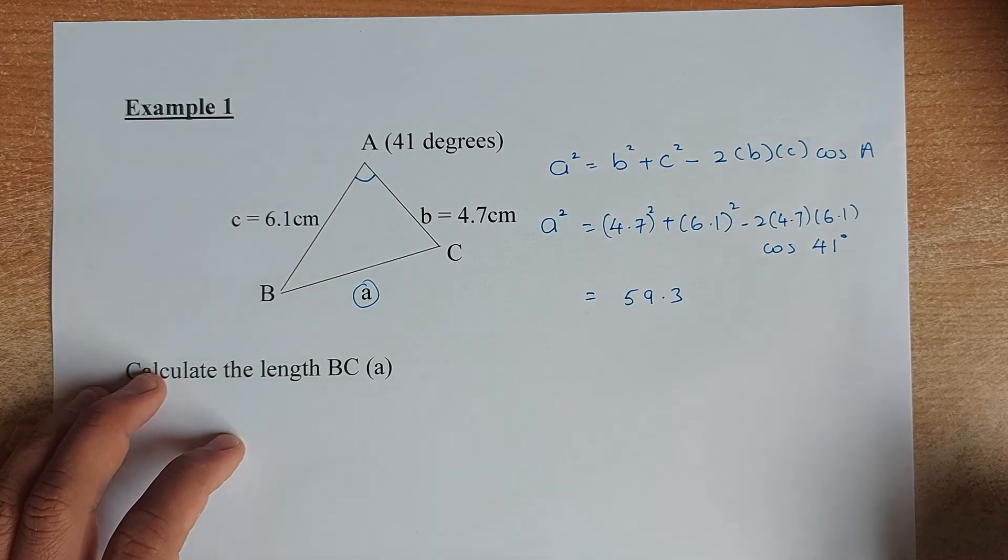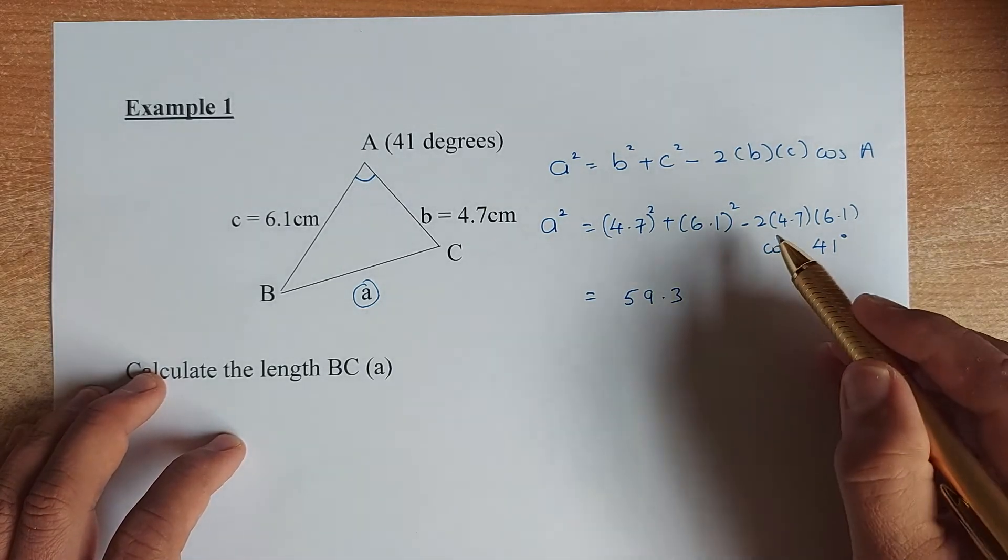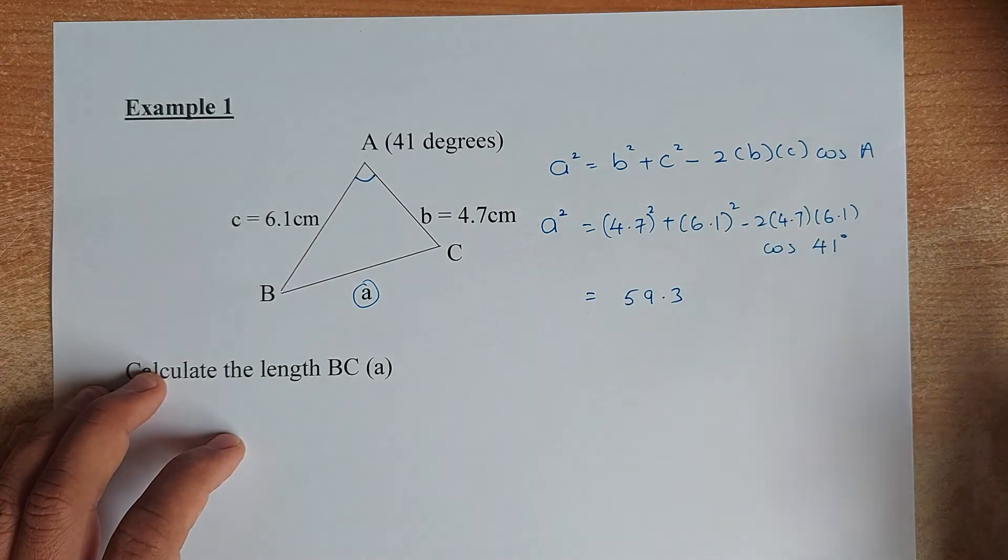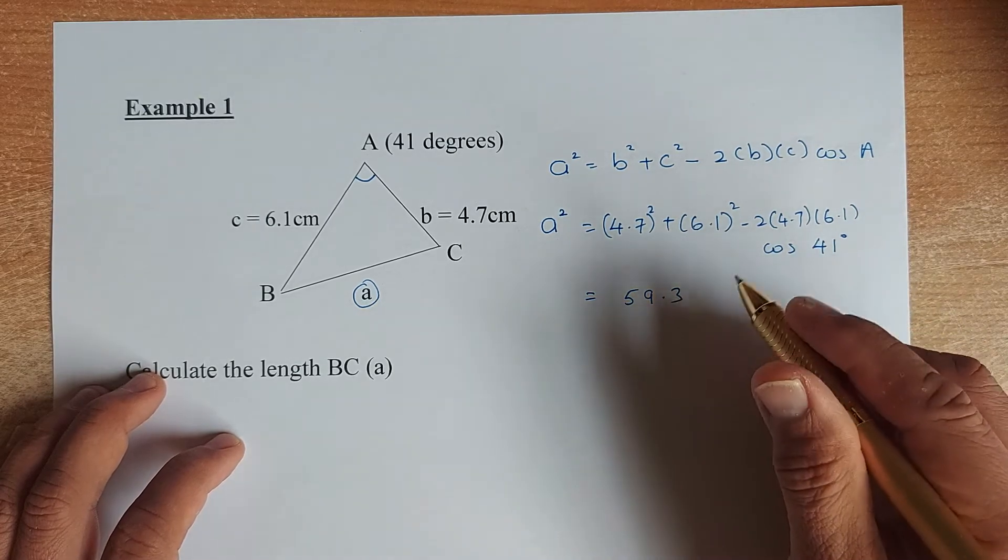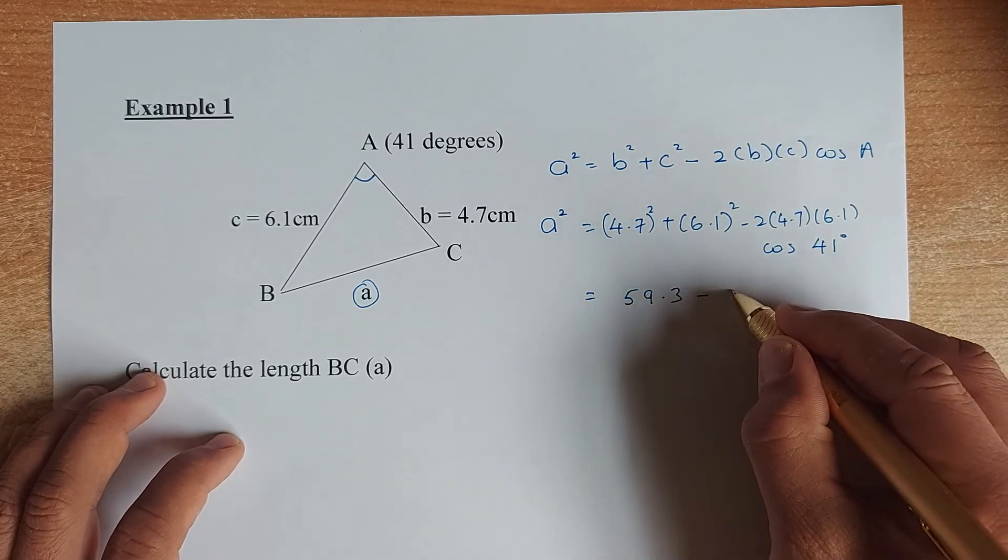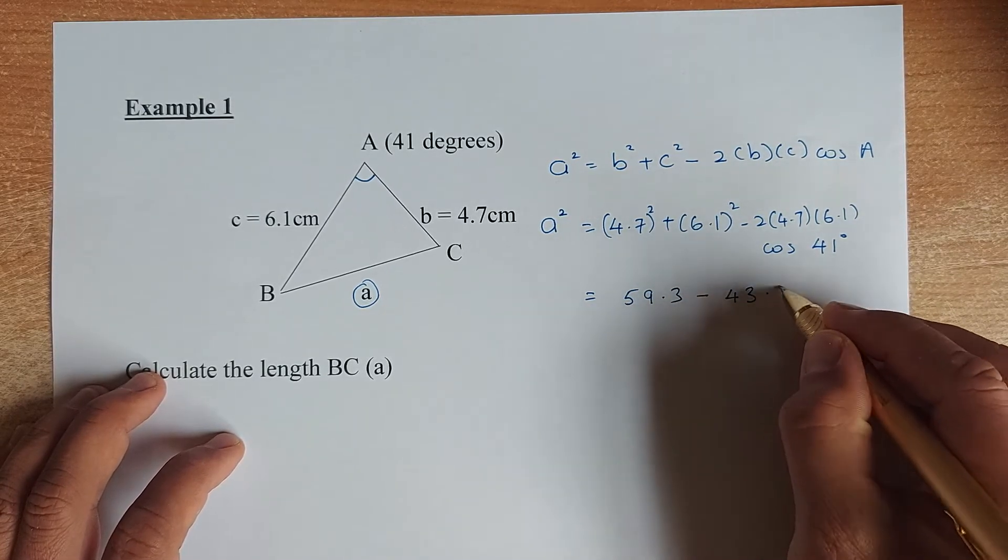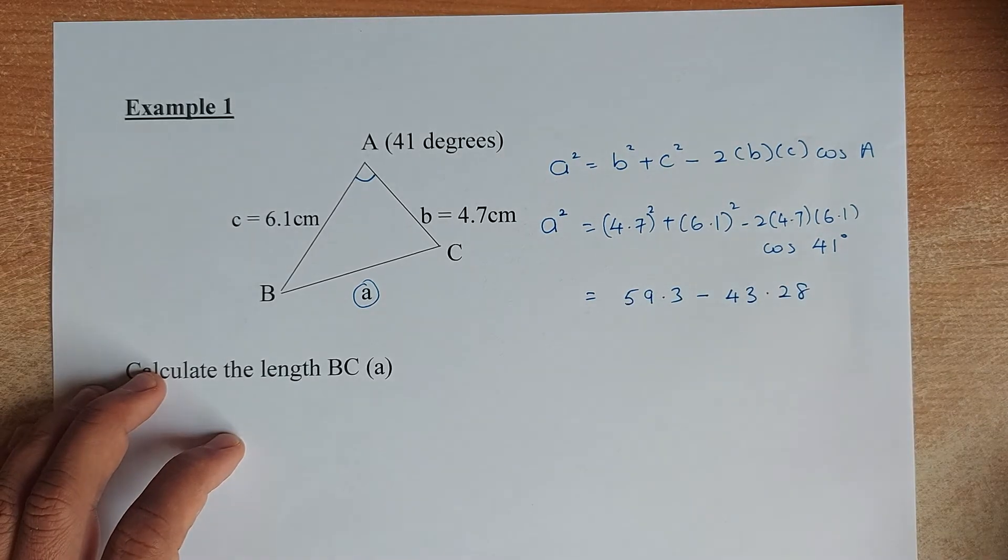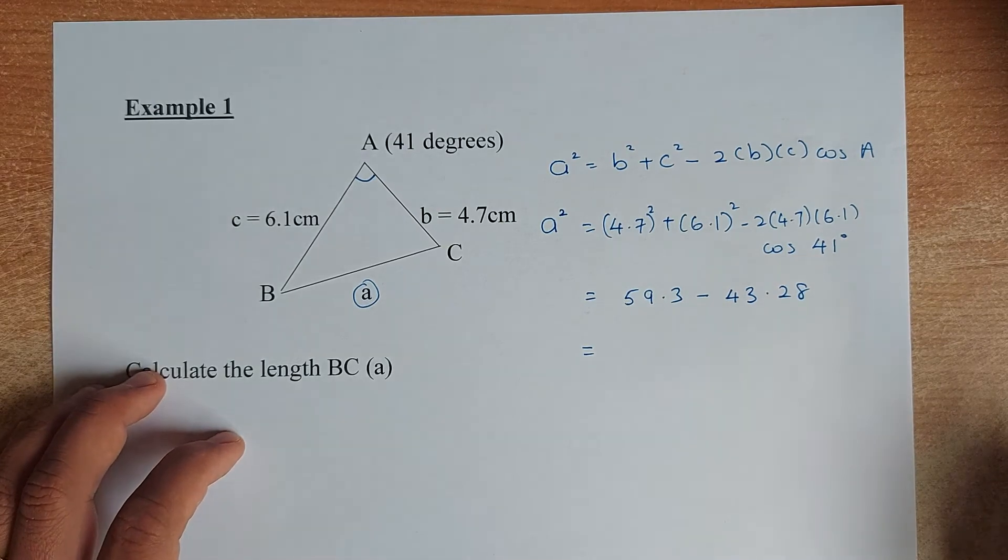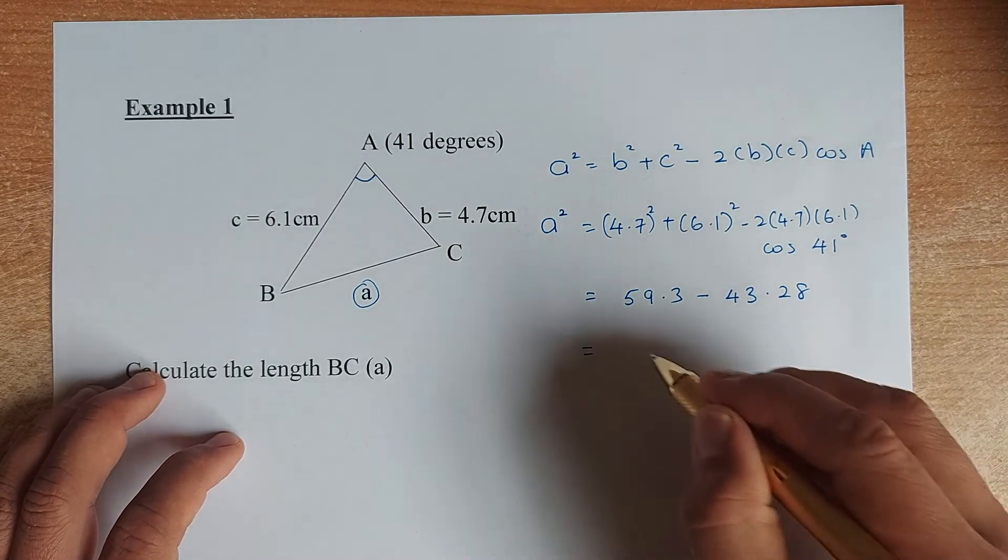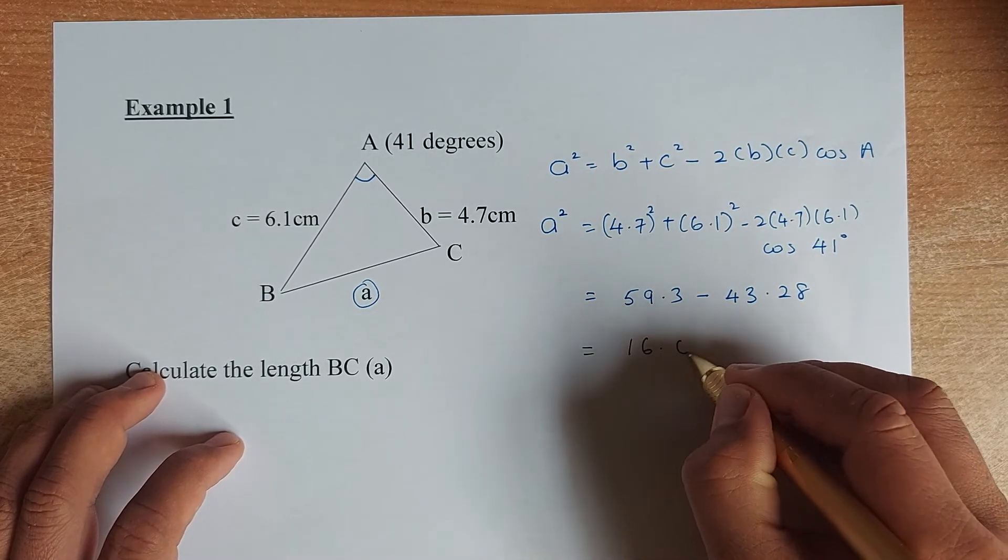Check with me. Now you're going to put in your calculator 2 multiplied by 4.7 multiplied by 6.1 multiplied by cosine 41 and I've done the calculation before. It's going to be 43.28. So far so good?